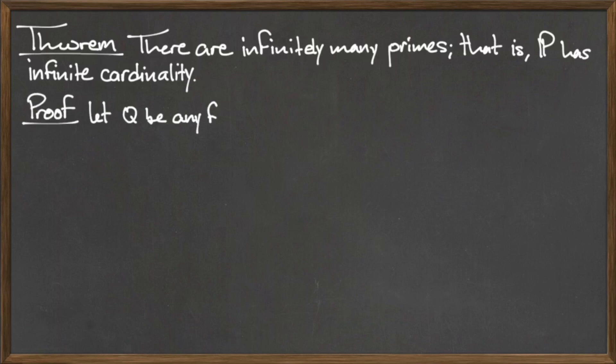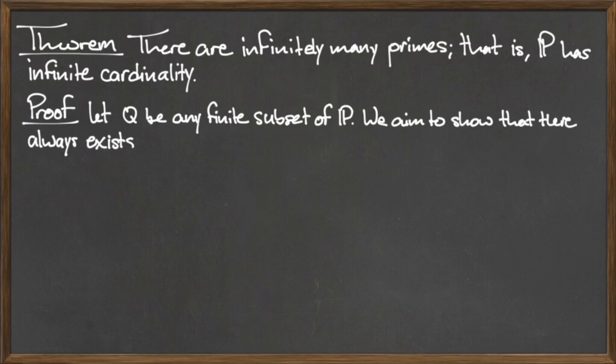To prove this theorem, let capital Q be any finite subset of the set of prime numbers. For this proof to be complete, we will show that there always exists an element in the set of prime numbers that is not in the set Q.